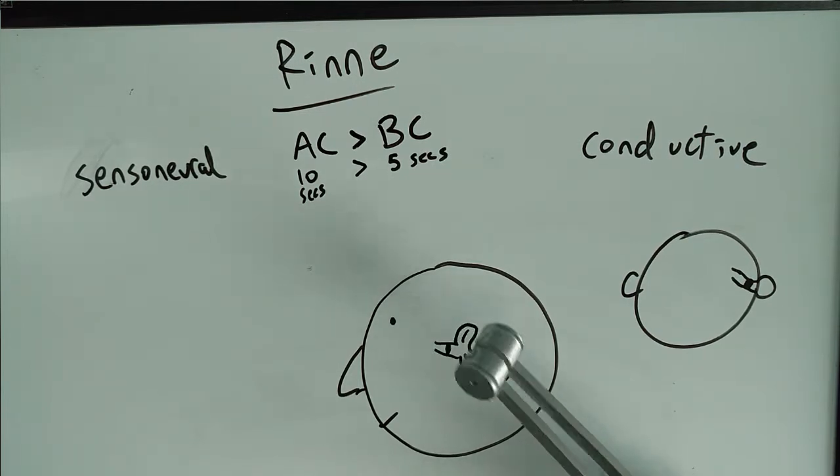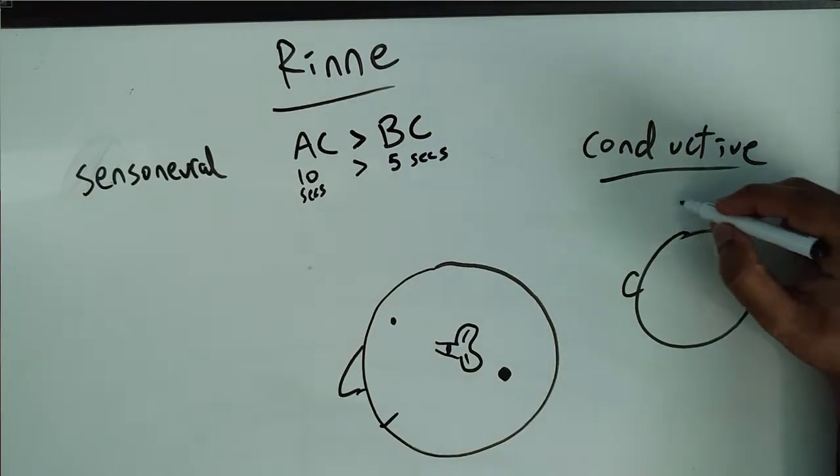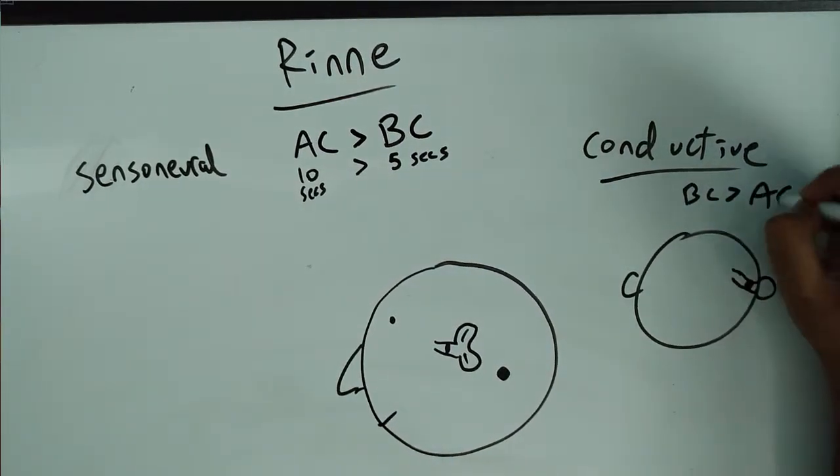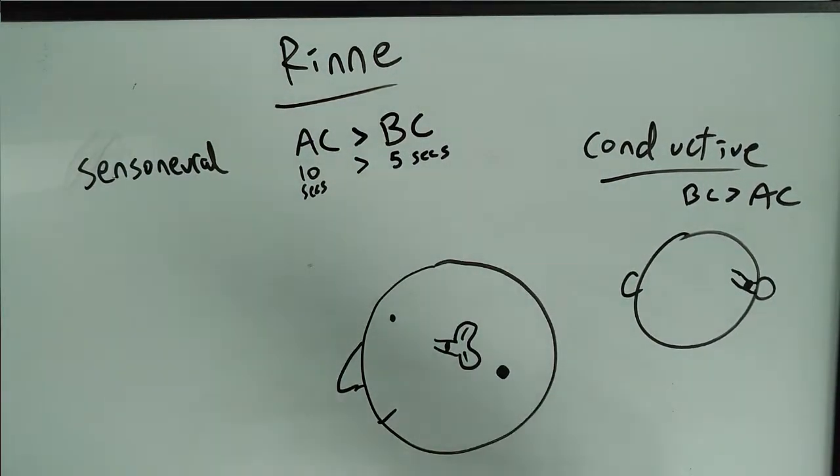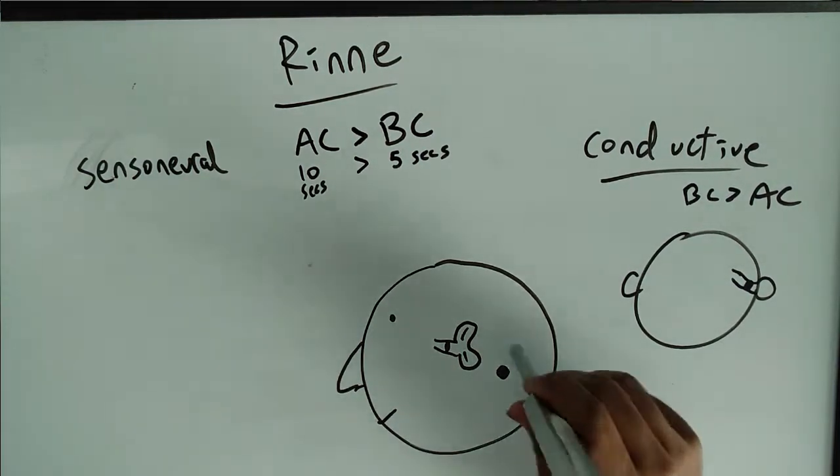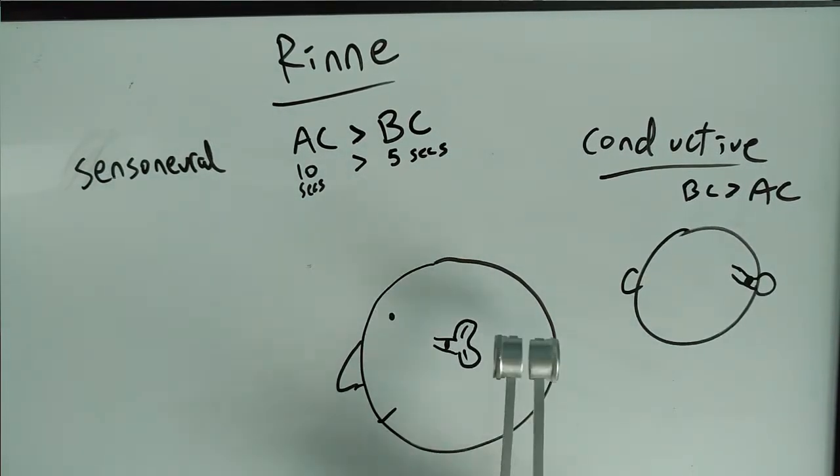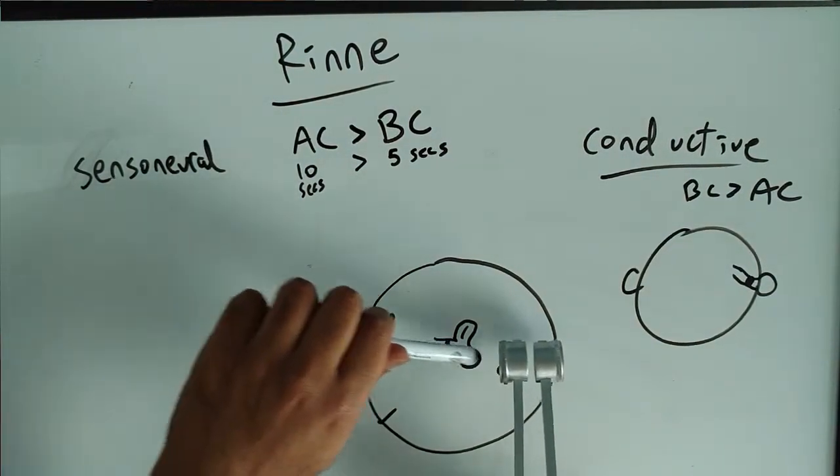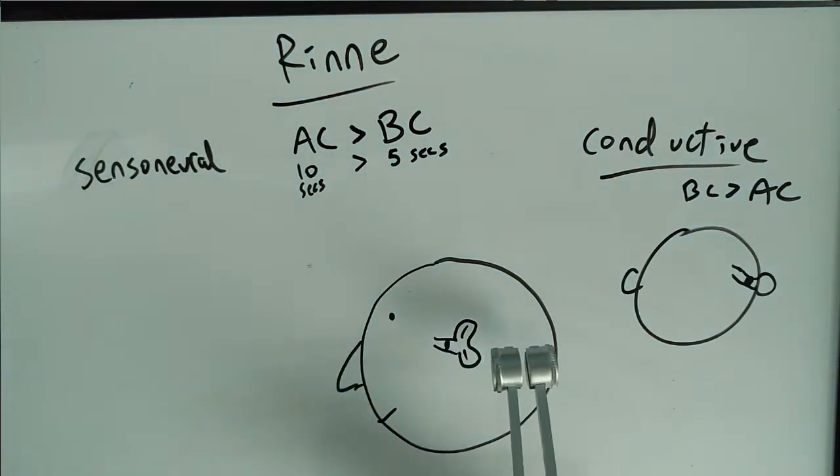That means the bone feeling lasted longer than the ear feeling. So in a conductive hearing loss person, BC is greater than AC. It's the opposite of a normal person, because there's a blockage. You put it on the bone, they feel it normally like any normal person would. Put it next to their ear, there's a blockage. There's no signal going through the ear, so they don't feel anything. They feel the bone more than the air. So conductive, BC is greater than AC.